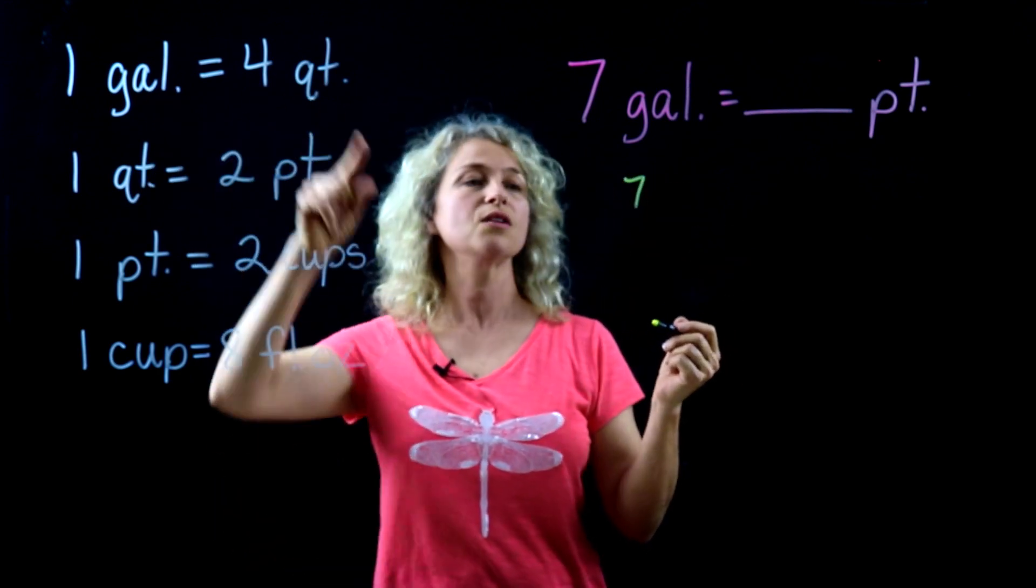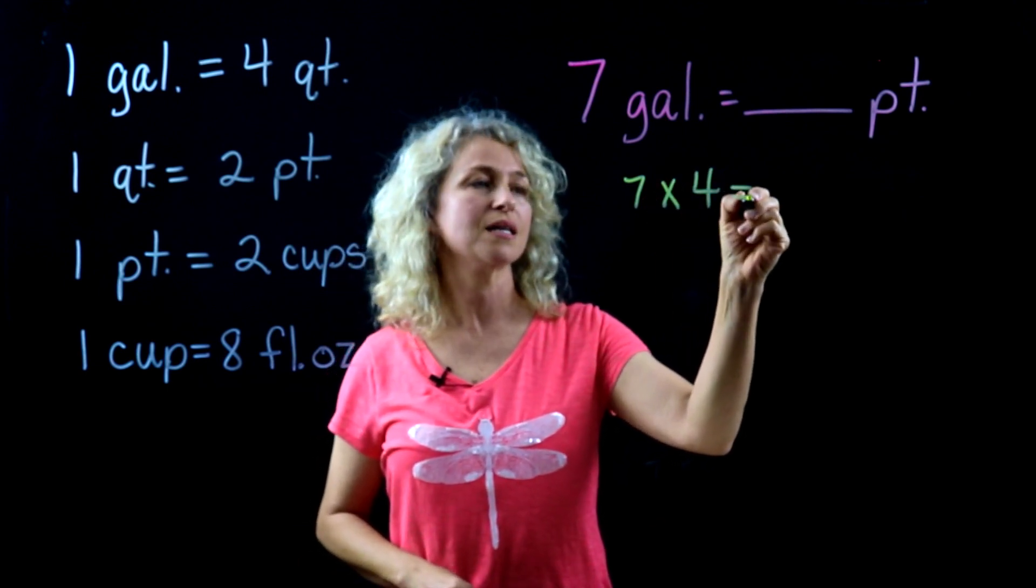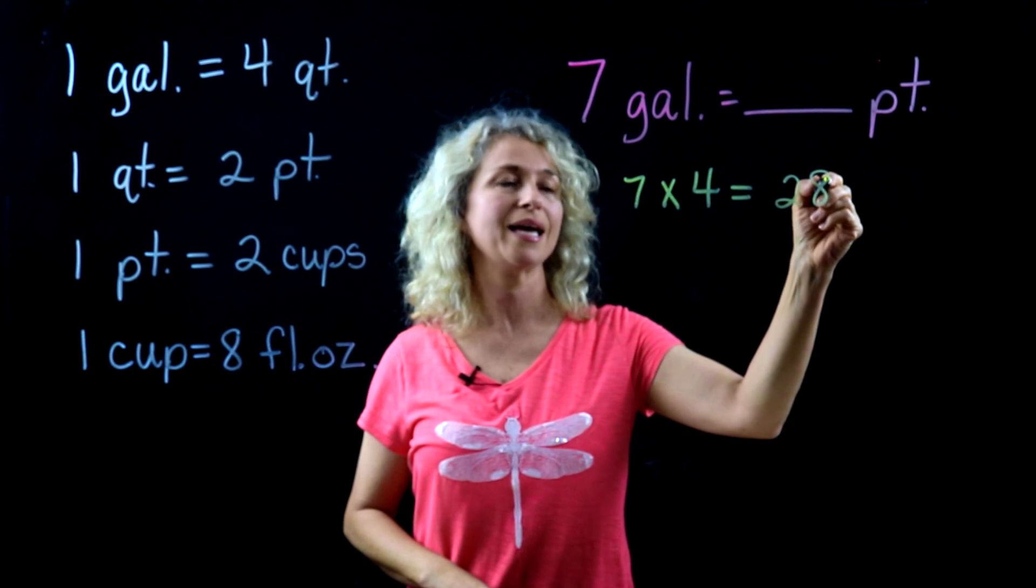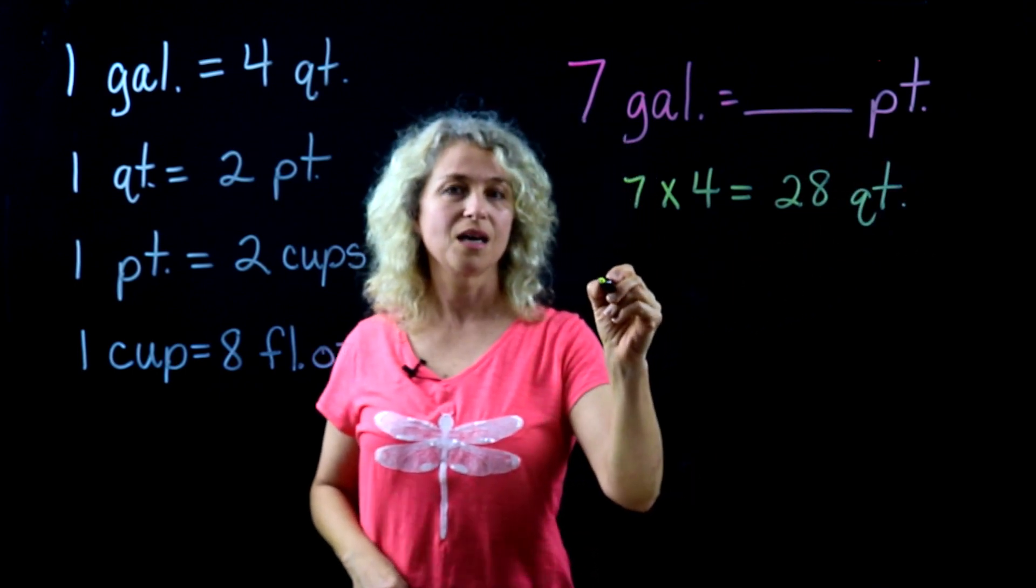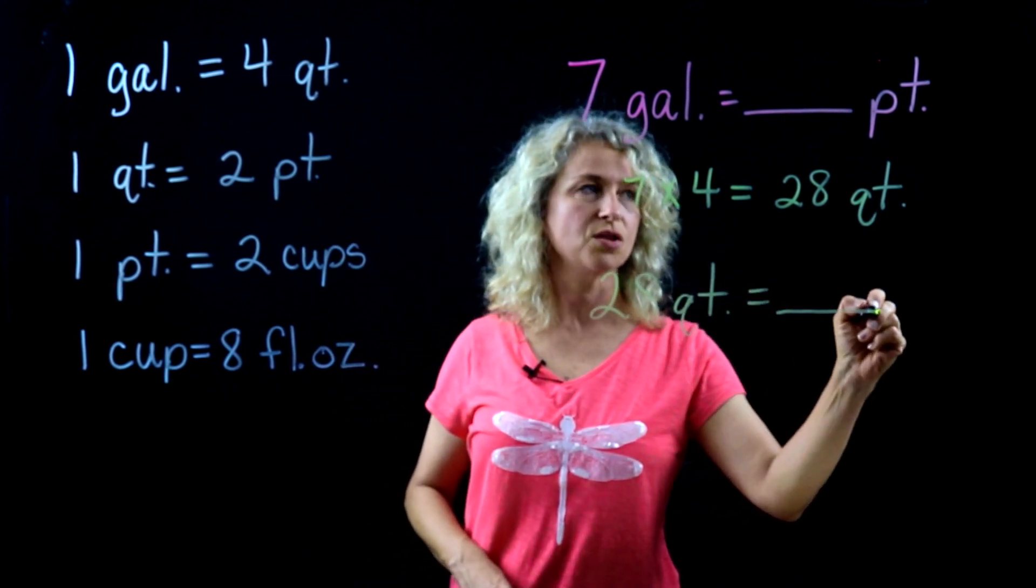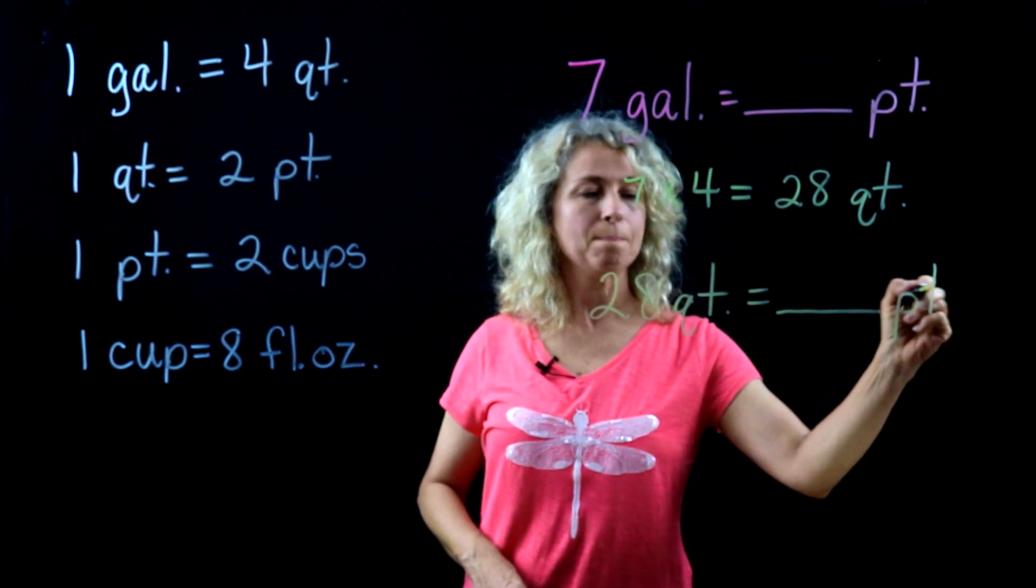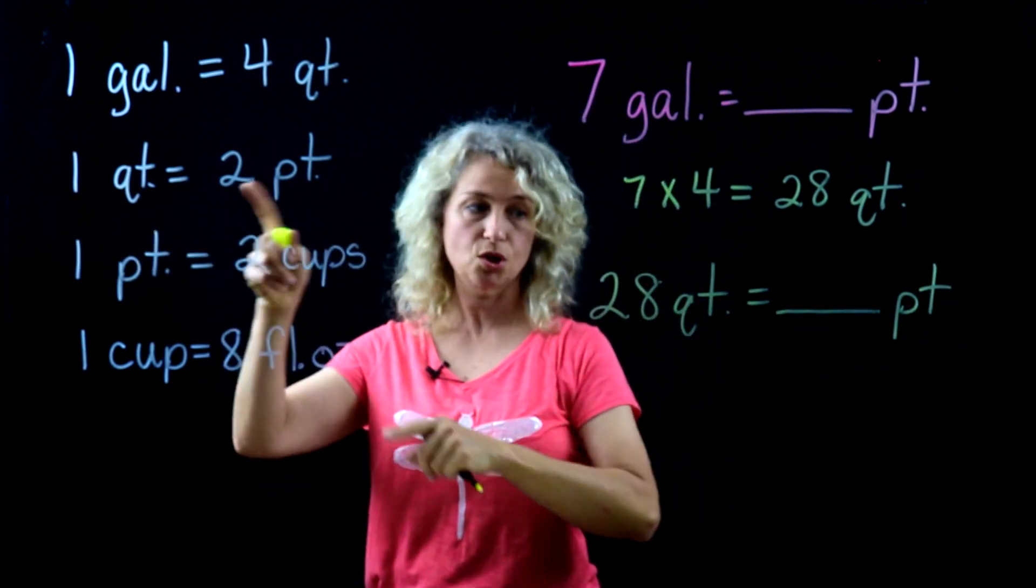So we're going to take seven gallons and convert it times four to get 28 quarts. Then we're going to take our 28 quarts and change that to pints.